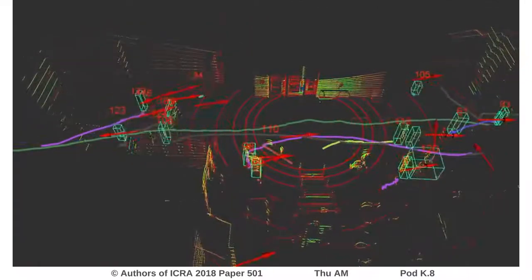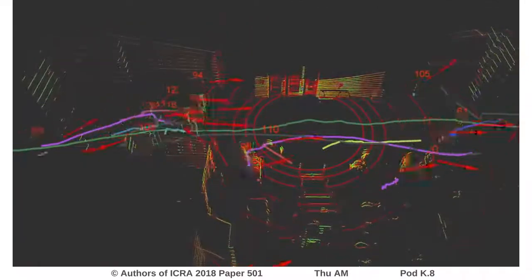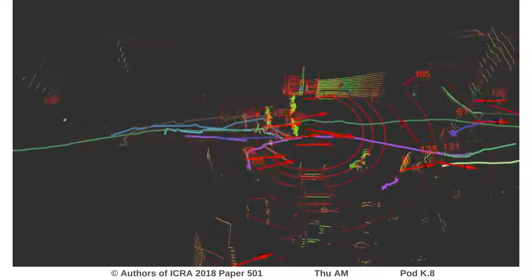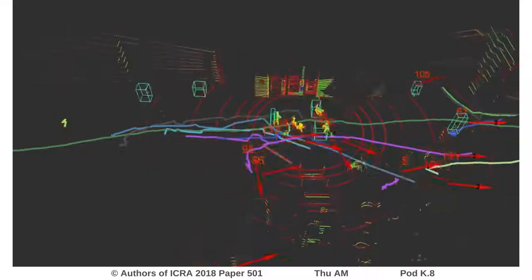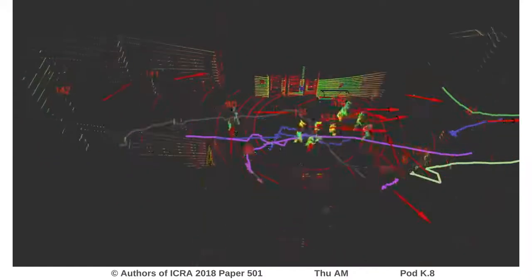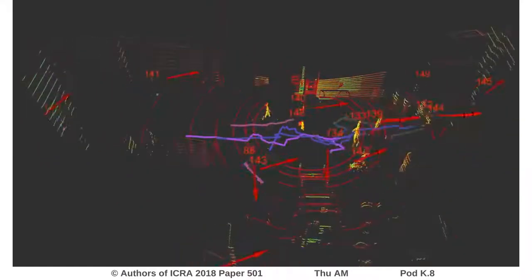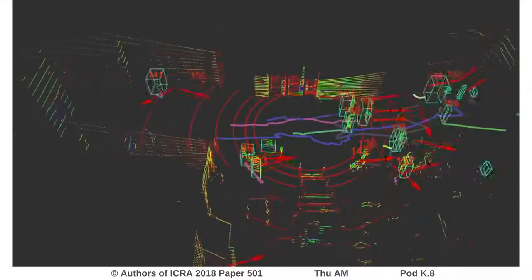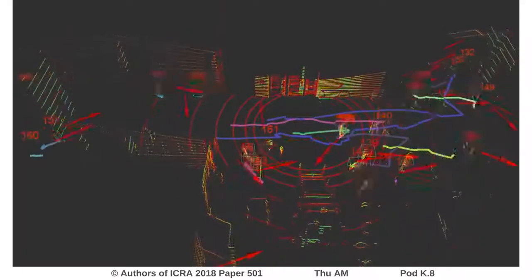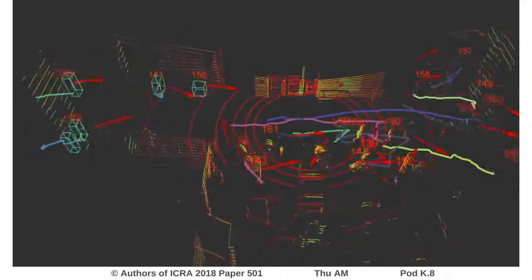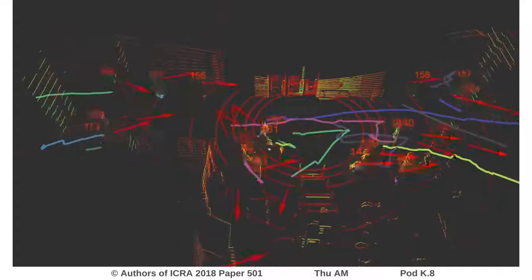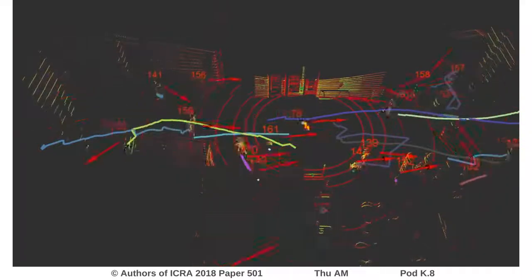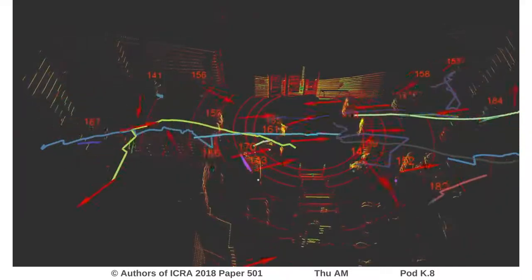In this demo, a multi-human detection, recognition, tracking, and trajectory prediction pipeline is integrated. The detected humans are shown in green bounding boxes, the trajectory observations are shown in colored lines, and the predicted poses are shown in red arrows. The running time of our system is 10 Hz.